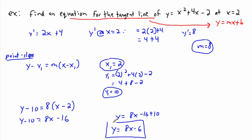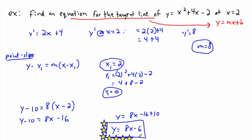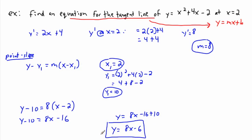So the equation of the tangent line is Y equals 8X minus 6 — that's the final answer. That's how we deal with something that might look complicated. Y equals 8X minus 6, that's what we wanted.